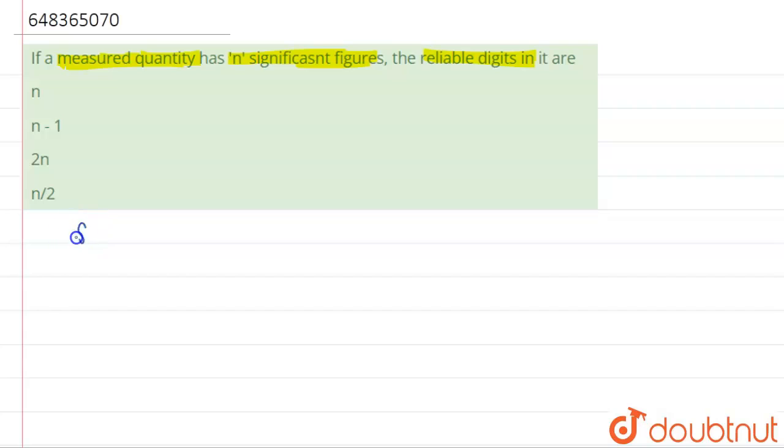if a value has a number of significant figures equal to n, then the reliable values are